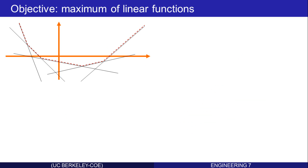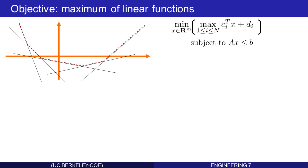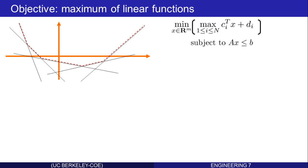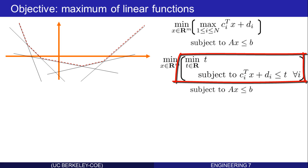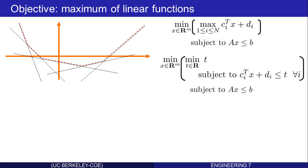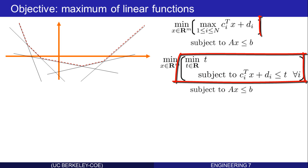We're trying to solve: minimize over x in Rm this cost function — the pointwise maximum over a bunch of affine functions — subject to the normal linear inequalities of a linear program in standard form. Remember that the maximum of a bunch of numbers is the smallest number larger than all of them. Therefore, let's rewrite this, expressing the term in brackets as another minimization. On the outside, minimize over x in Rm subject to Ax ≤ b. The inside term is rewritten as: minimize over t the value t, subject to the constraint that ci transpose x + di ≤ t for all i. At any fixed value of x, that is the maximum.